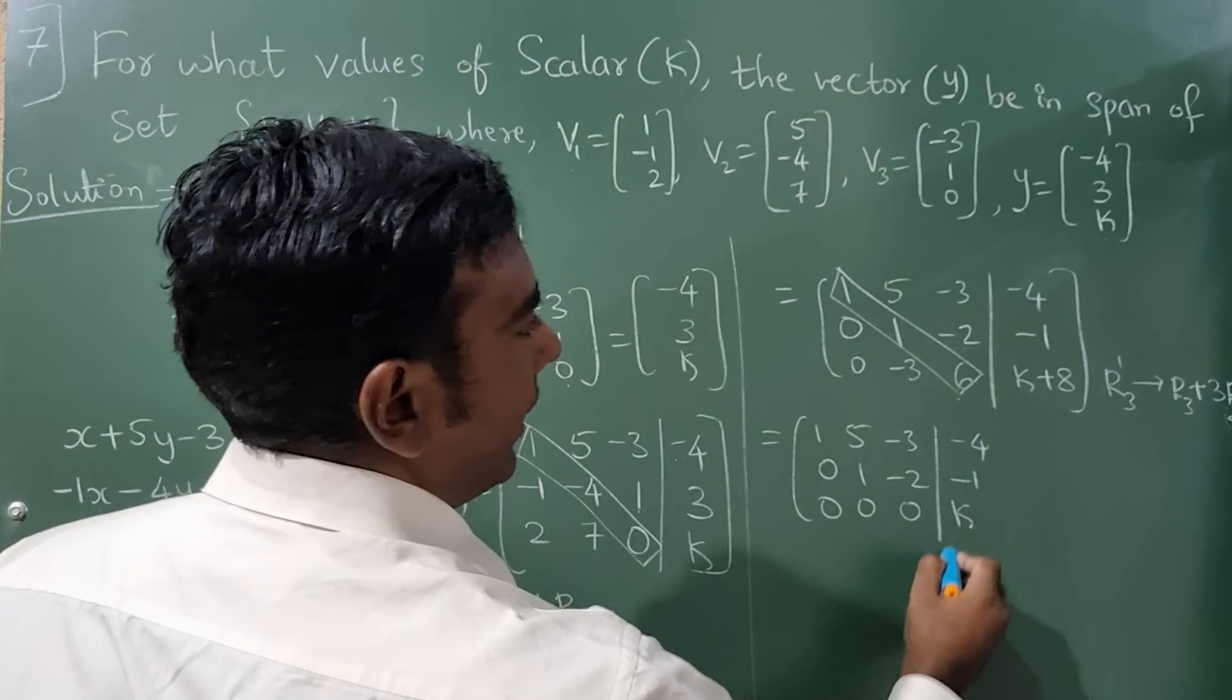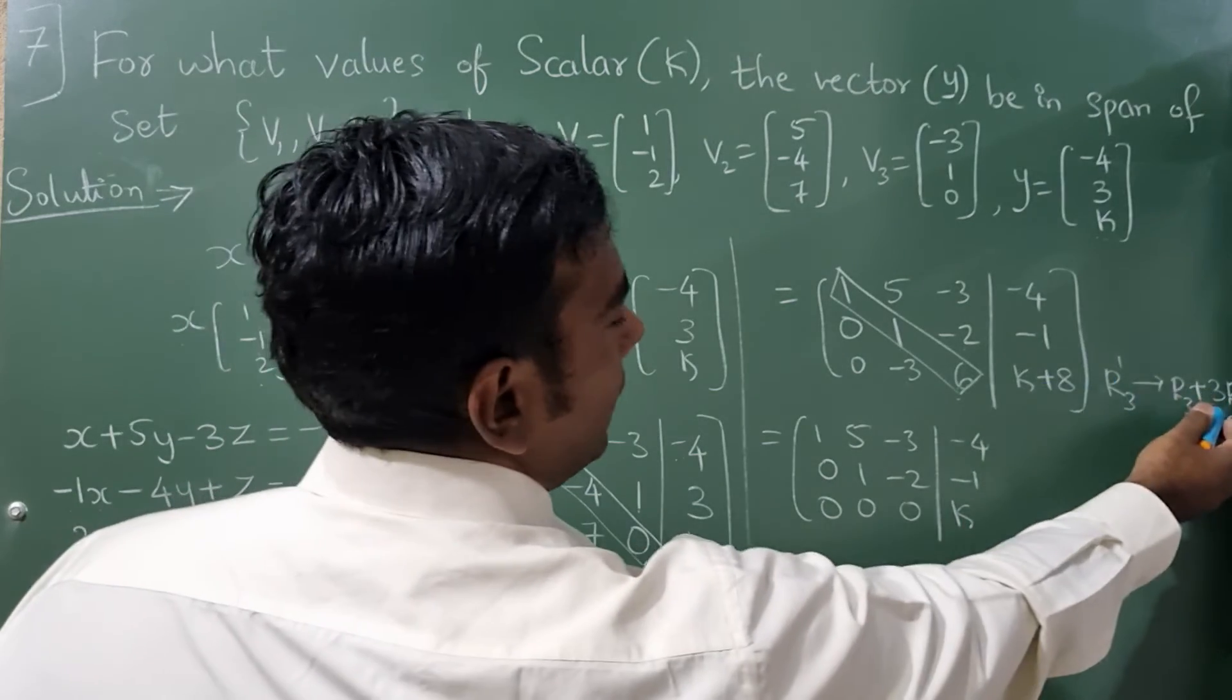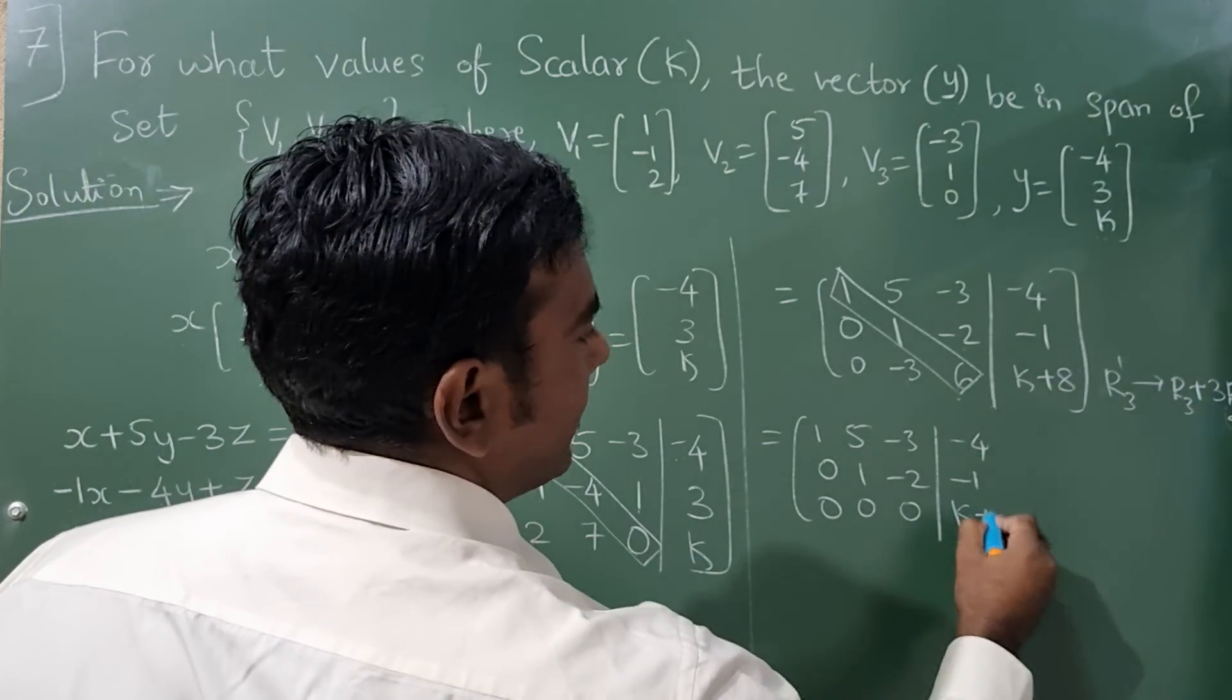Minus 2*3 is 6, this is also 0. K and 3, so 8 minus 3 is 5.